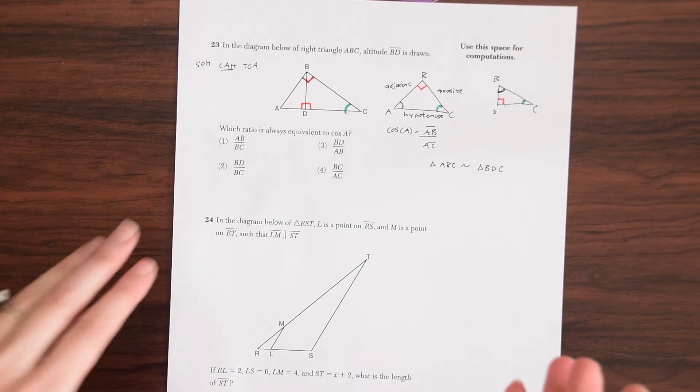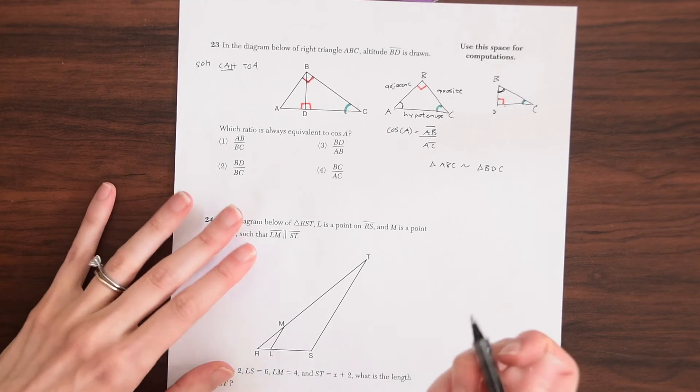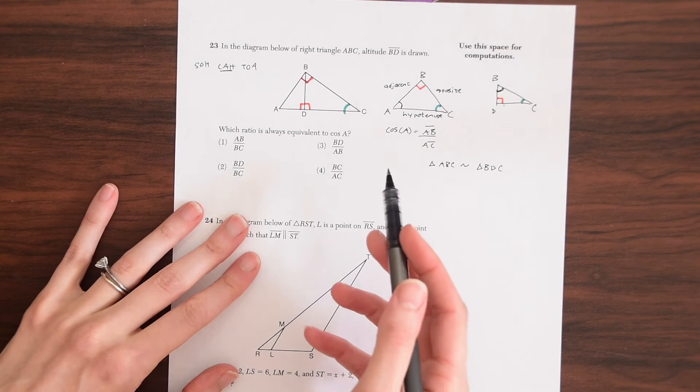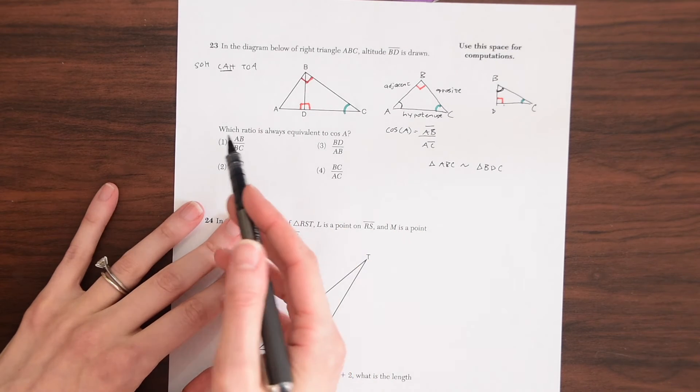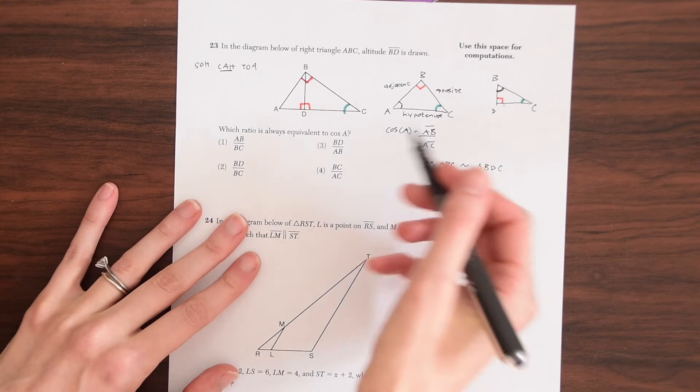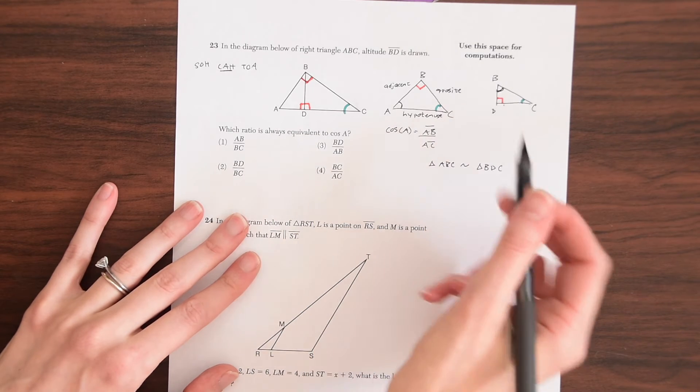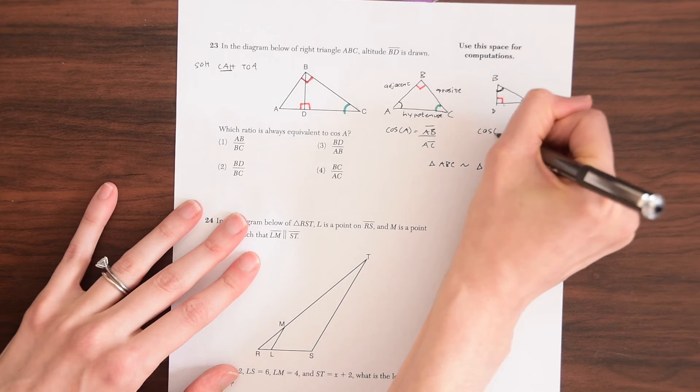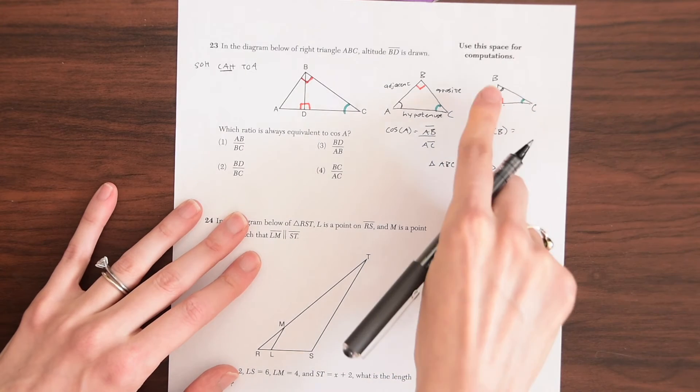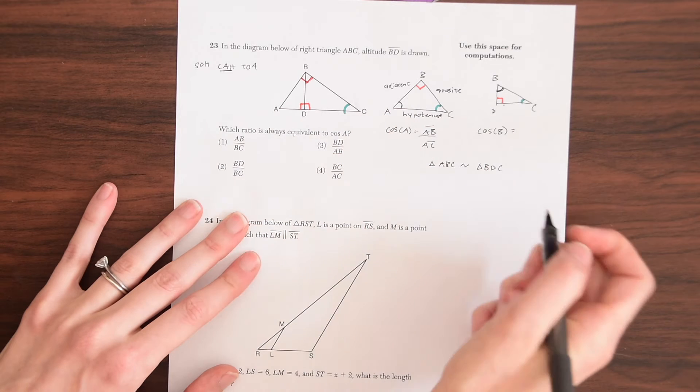So what this is going to allow us to do, now that we know this, is that we can look at SOHCAHTOA again and now identify cosine of B really. So this time we're going to find a cosine of B, which is the corresponding angle to cosine of A.